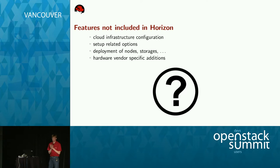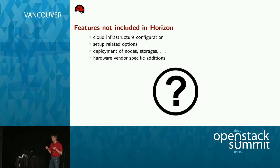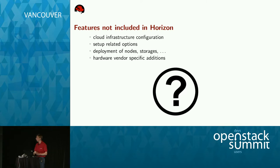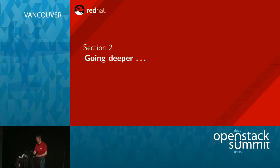Features not included in Horizon for several reasons: you cannot set up your cloud infrastructure or configure it via a graphical interface — like adding a new Keystone, adding a new Nova host, or whatever. You cannot deploy any nodes, cannot configure storage, and we don't support vendor-specific additions right now. Every rule has an exception — there's currently a router dashboard included in Horizon which is meant to be a dashboard for a Cisco-specific addition.